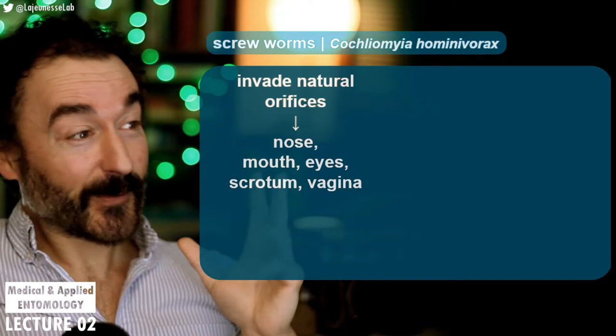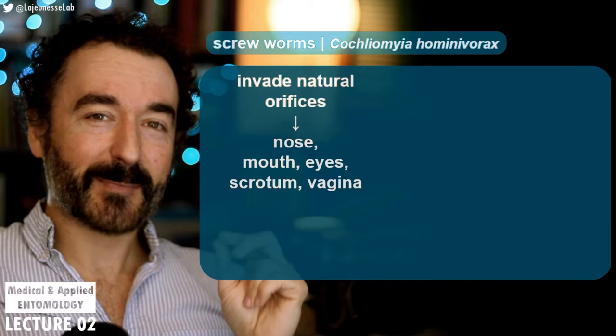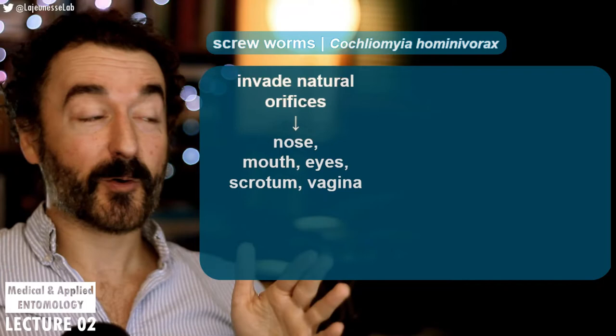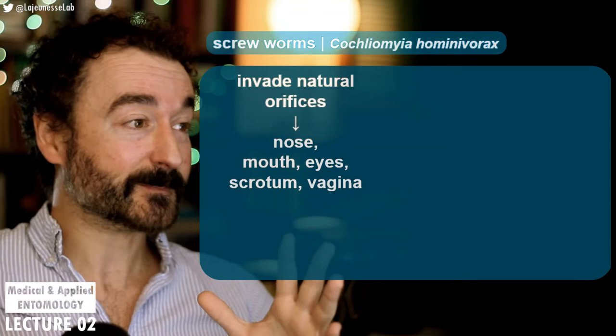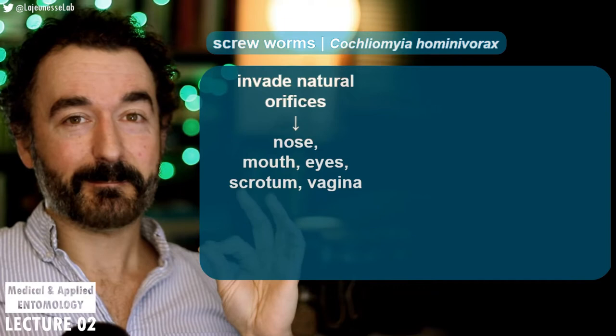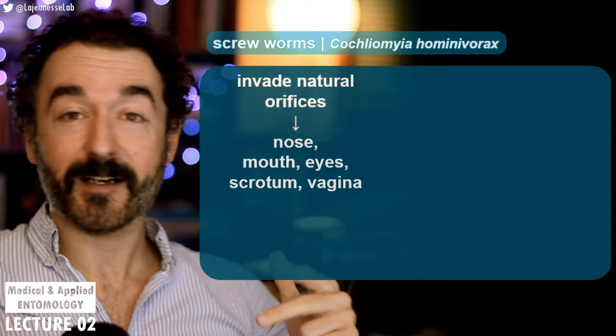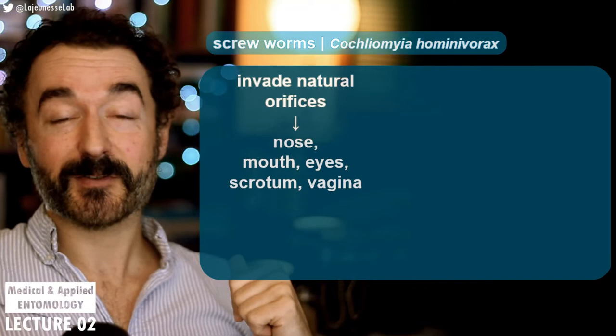Historically for humans, anywhere where the epidermis is thin is an opportunity for a screwworm to take hold. The female fly lays a bunch of eggs, they hatch, and they burrow into the skin and then into actual muscle tissue. A thick epidermis will prevent screwworm infection, so infections occur in the nose, mouth, eyes, scrotum, and vaginal region — all places where the tissue is fairly thin, providing an opportunity for screwflies to colonize.